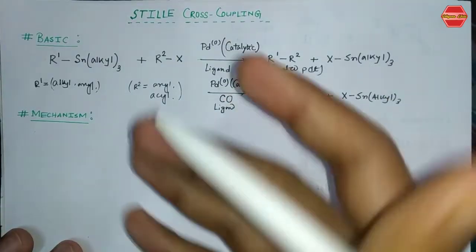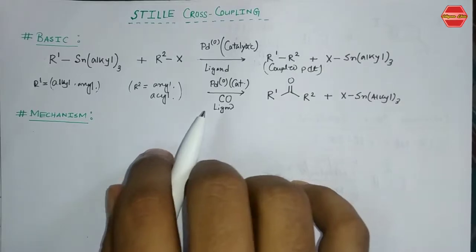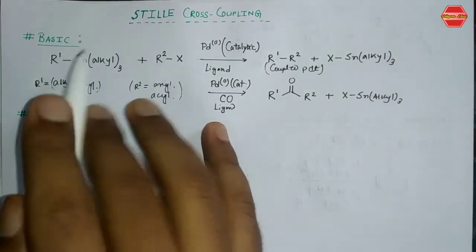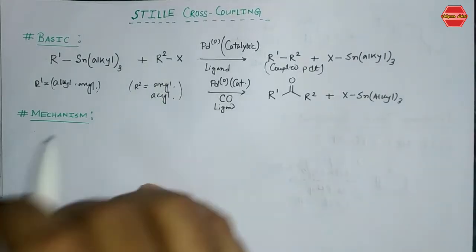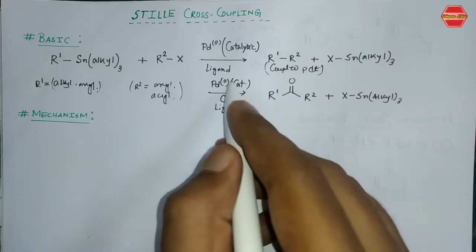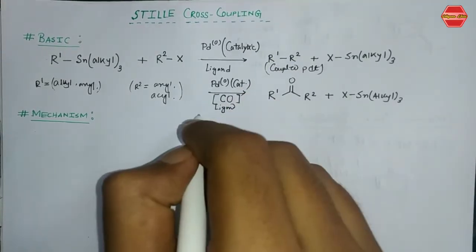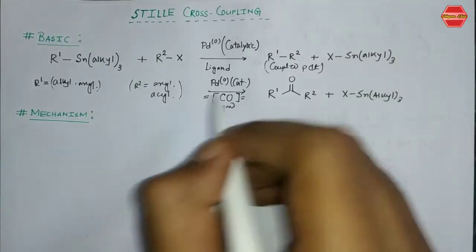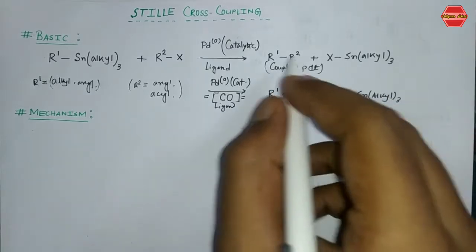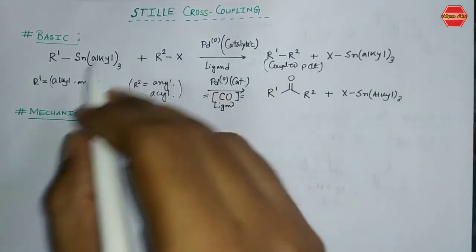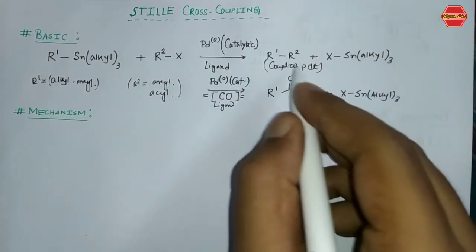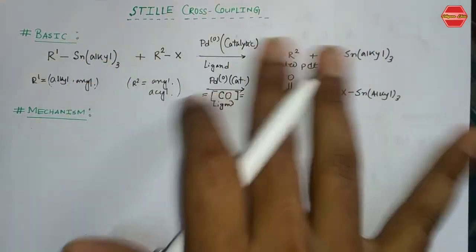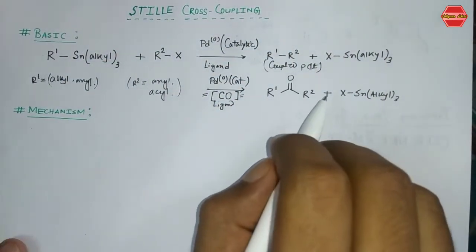Now, what about the Stille carbonylation reaction? From the name you can identify this is a carbonyl-forming reaction. You start with the same organotin as coupling partner and the organohalide as the other coupling partner. Along with Pd(0) and the ligand, you must use carbon monoxide as the important reagent to get the Stille carbonylation product. The product you get is a ketone or aldehyde, depending on the R groups.